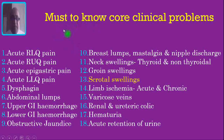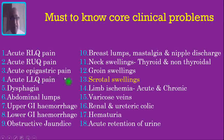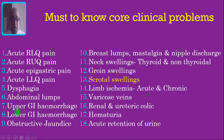They are: acute right lower quadrant pain, acute right upper quadrant pain, acute epigastric pain, acute left lower quadrant pain, dysphagia, abdominal lumps, upper GI hemorrhage, lower GI hemorrhage and obstructive jaundice. All these 9 problems are concerned with the GI tract.